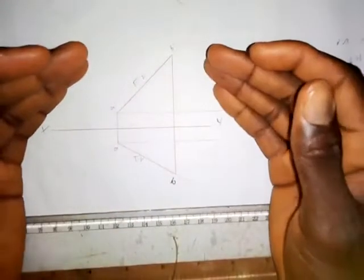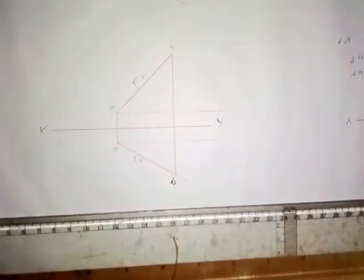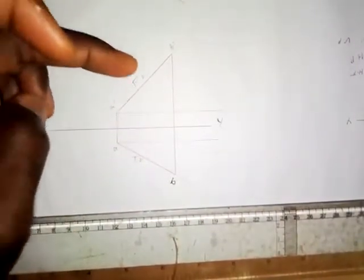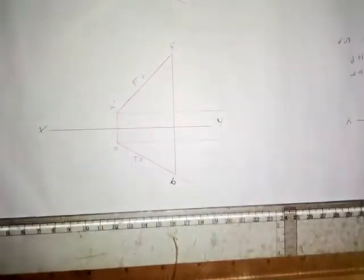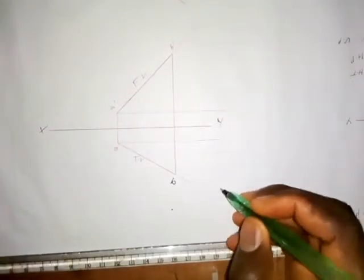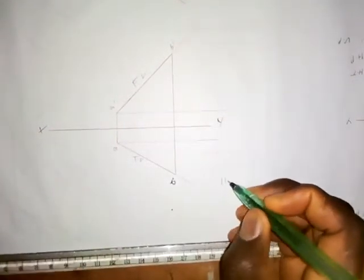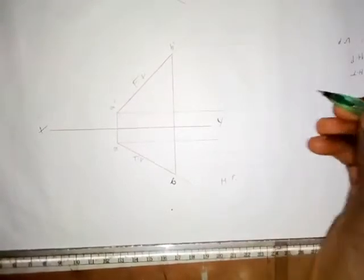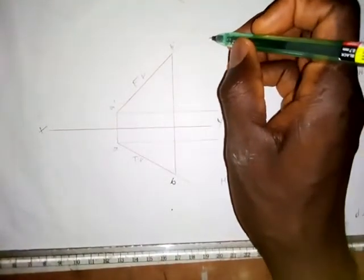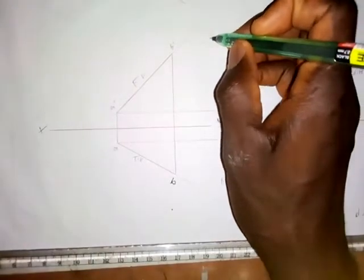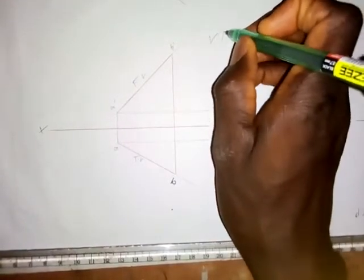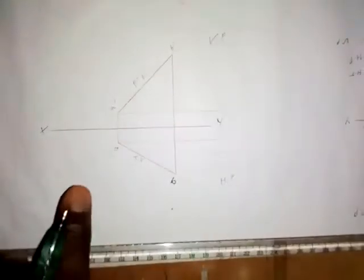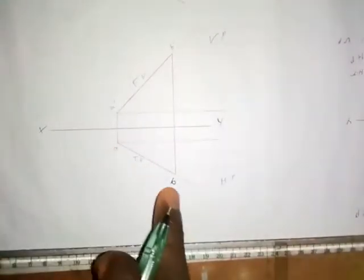This is the diagram that the question is referring to. This is the top view and this is the front view. We have the top view in the horizontal plane here, and the front view here in the vertical plane. So A prime, B prime is the front view, and the top view is AB.